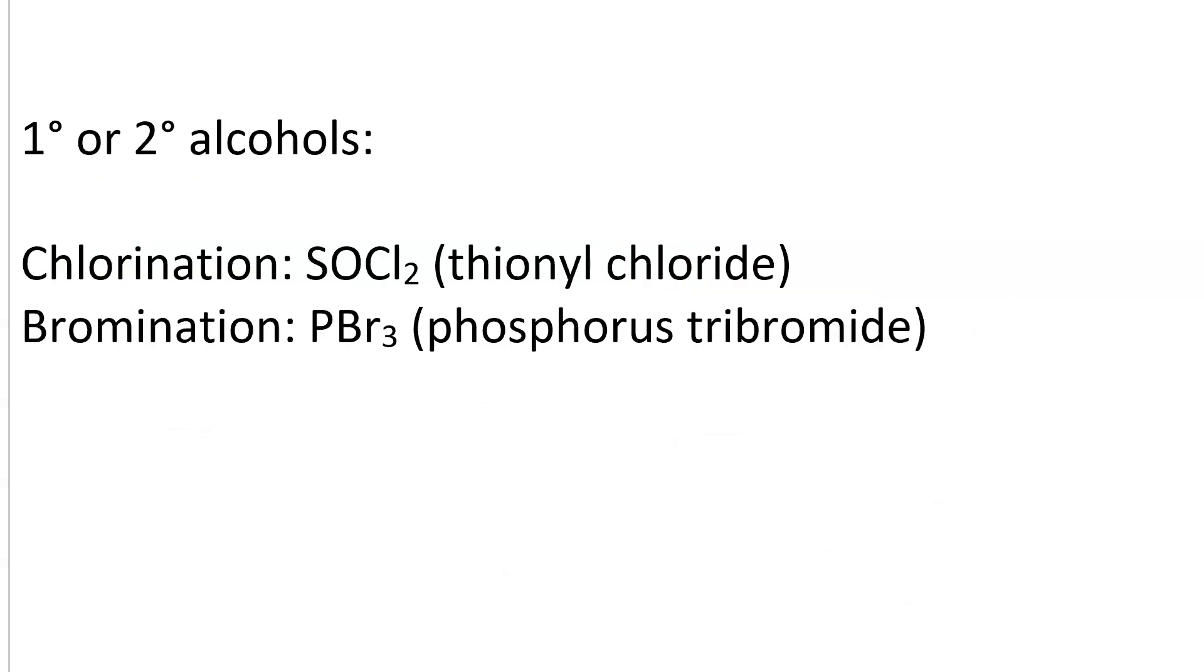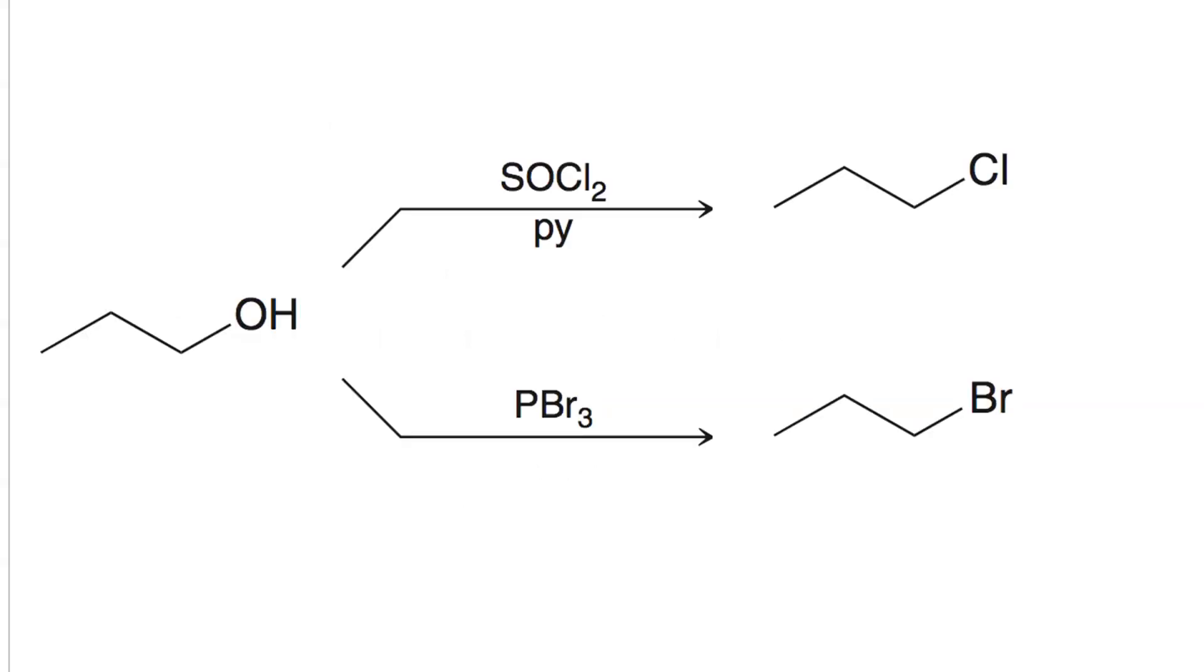Another cool way to do halogenation or SN2 substitution on a primary or secondary alcohol. If you want to make the alkyl chloride, you use thionyl chloride, SOCl2. If you want to do bromination, your reagent is PBr3, phosphorus tribromide. So here's 1-propanol. If we react it with thionyl chloride and pyridine, we get 1-chloropropane. If we react it with PBr3, we get 1-bromopropane.